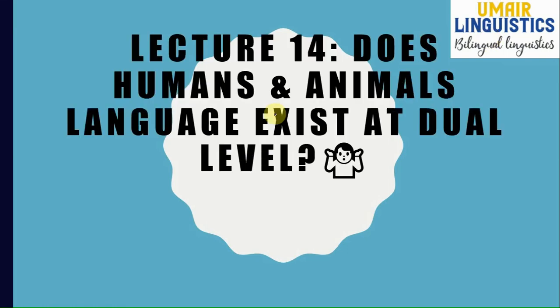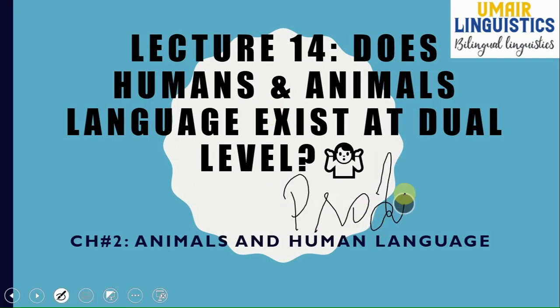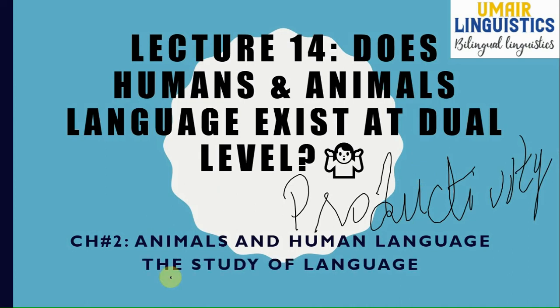Today our lecture is: does human and animal language exist at dual level? Or in simpler words, does humans and animals have duality in their language? In the last lecture, we discussed about productivity, and the link is in the description below as well as in the cards. Our chapter is Animals and Human Language, Chapter 2, and we are following the book The Study of Language by George Yule, whose latest edition was published in February 2019. It is one of the best-seller books in Introduction to Linguistics, published by Cambridge University Press.